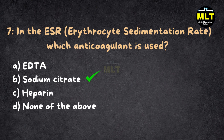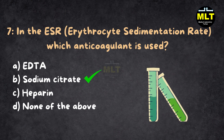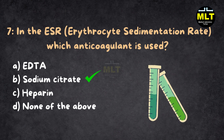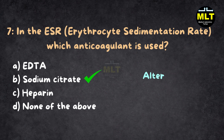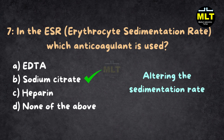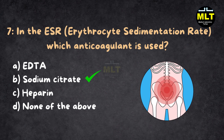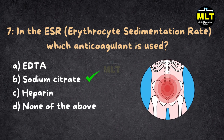Correct answer: B. Sodium citrate. Explanation: Sodium citrate is used in ESR tests because it prevents clotting without altering the sedimentation rate of red blood cells. The test helps detect inflammation and other conditions.